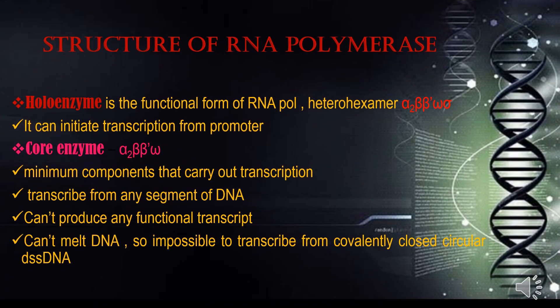The RNA polymerase is the enzyme involved in transcription. RNA polymerase consists of two forms: the holoenzyme and the core enzyme. The holoenzyme is the functional form of RNA polymerase. It is a heterohexamer that consists of alpha-2, beta, beta-dash, omega, and sigma. It is the only form that can initiate transcription from a promoter, because it can distinguish the promoter site.